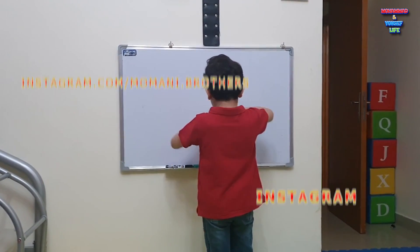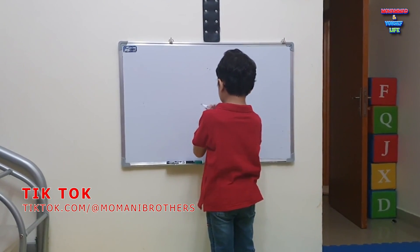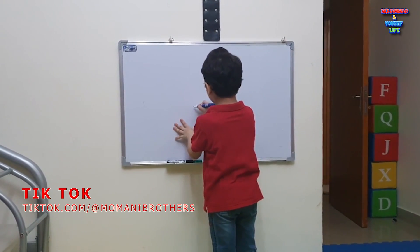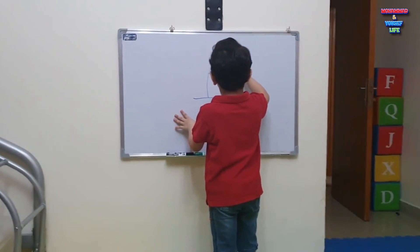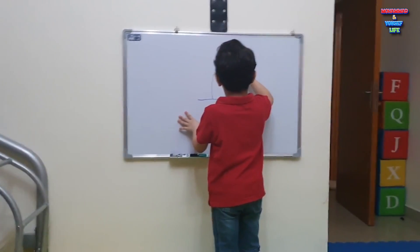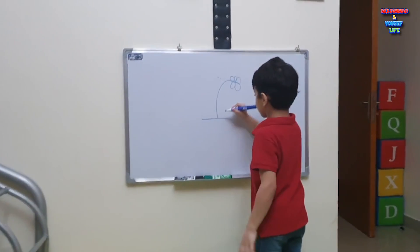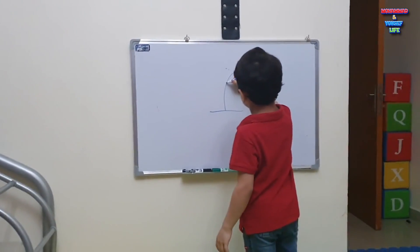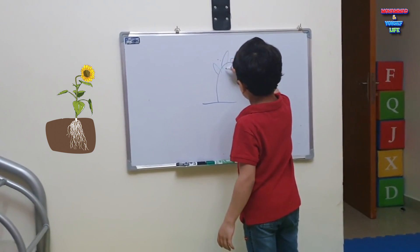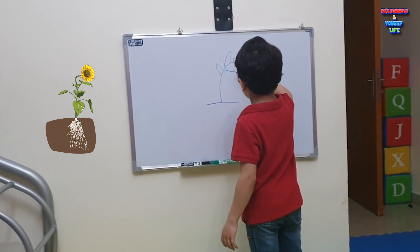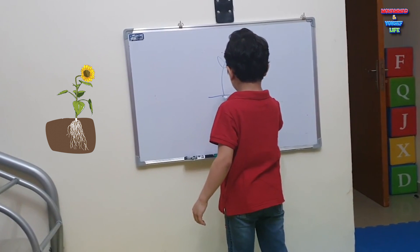First thing, let me draw a plant. This is the ground. And this is the flower, here. Here is the rose.